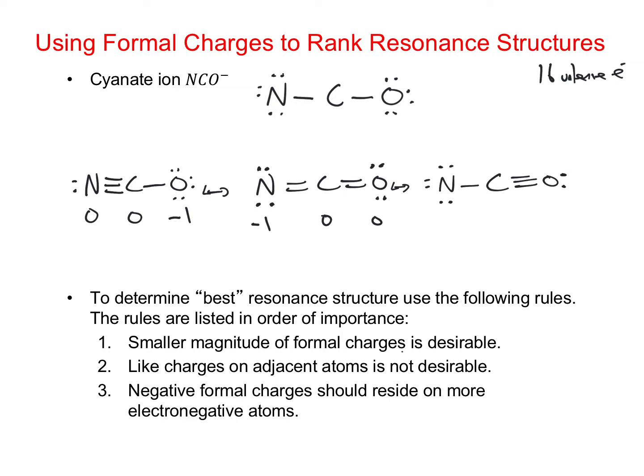In the last Lewis structure: nitrogen has 5 valence electrons minus 6 lone pair electrons and 1 stick, so 5 minus 7 gives a negative 2 on the nitrogen. Carbon still has no lone pairs and 4 sticks, so it has a formal charge of 0. The oxygen has 6 minus 2 lone pair electrons and 3 sticks, so 6 minus 5 gives a plus 1 on the oxygen.